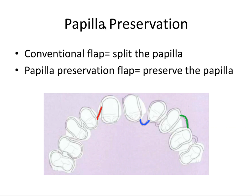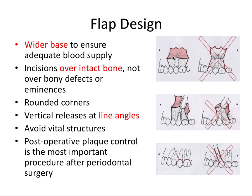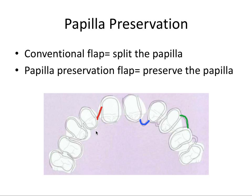Papilla preservation is a concept where we avoid splitting the papilla — conventional flap design had margins going straight through the papilla, resulting in papilla loss and black triangles. The papilla preservation flap preserves the papilla. The edges of the flap contact the line angles of the teeth. The three types go: lingual line angle to facial line angle of the adjacent tooth, lingual line angle to lingual line angle scalloped, or facial line angle to facial line angle scalloped.